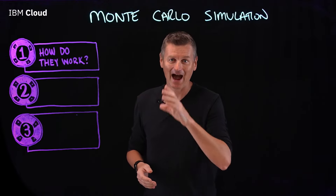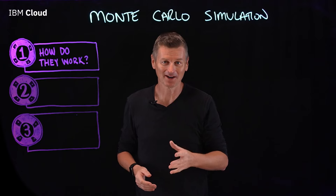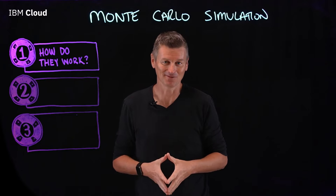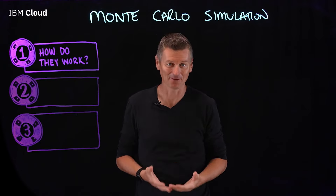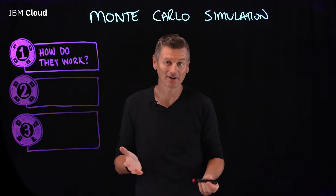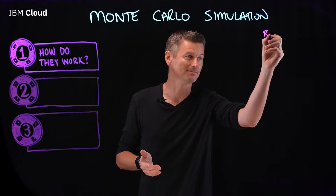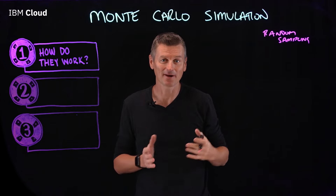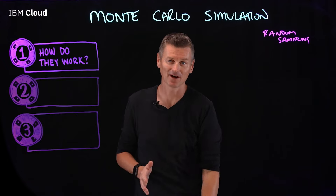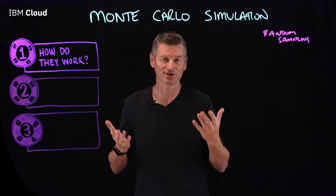Number one: how do they work? Monte Carlo simulation works by modelling the probability of different outcomes in a process or a system that cannot easily be predicted due to the intervention of random variables. It uses something called random sampling, which is used to generate multiple possible outcomes and calculate the average result.